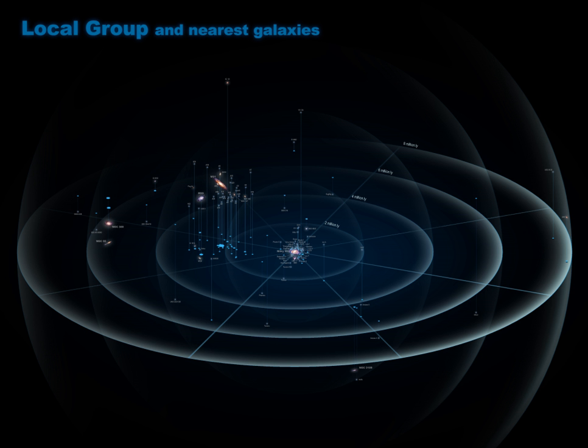The local group is the galaxy group that includes the Milky Way. The local group comprises more than 54 galaxies, most of them dwarf galaxies.